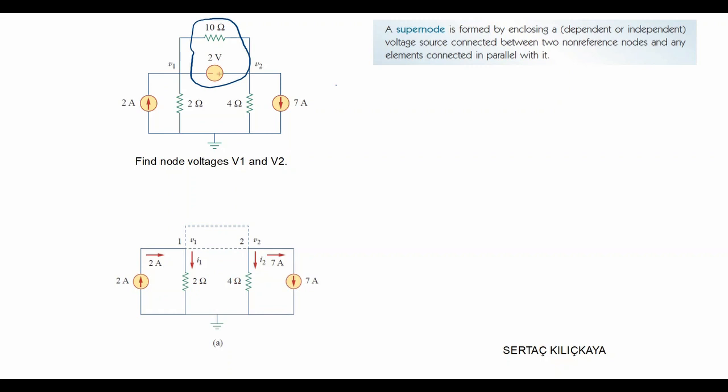First of all, if we discard this super node from the circuit, what is left is shown in figure A. And if we write a KCL equation on the super node we can get an equation like this.